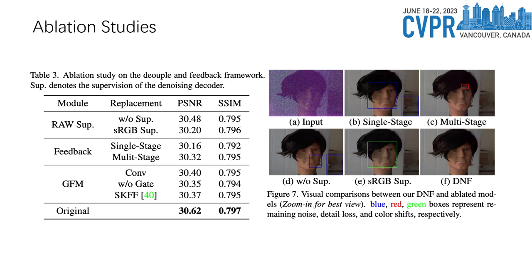In our ablation study, we demonstrate the effectiveness of our DNF framework's key components. First, we show that unreasonable task decoupling — such as not performing intermediate supervision or performing RGB intermediate supervision — leads to performance degradation, highlighting the importance of our domain-specific task decoupling approach. Second, changing our feedback mechanism to conventional single-stage or multi-stage methods also results in performance drops, underscoring the effectiveness of our denoising prior feedback. Finally, we demonstrate the effectiveness of the gating mechanism in our feature fusion module, which plays a crucial role in aggregating complementary features across stages, leading to improved imaging quality.